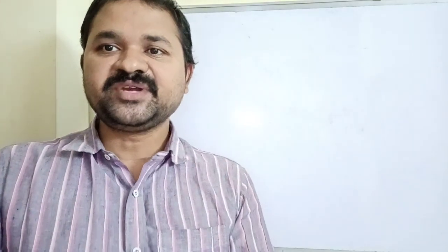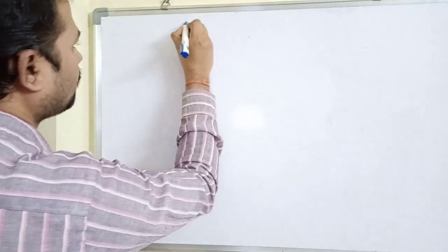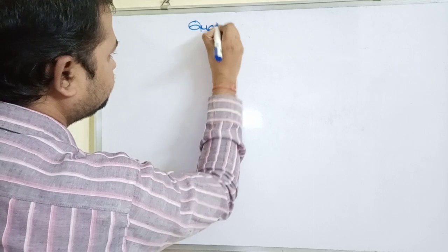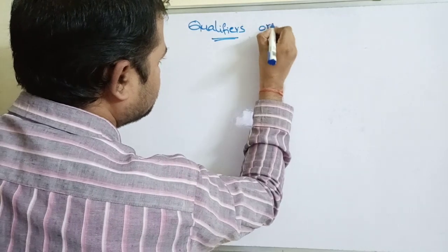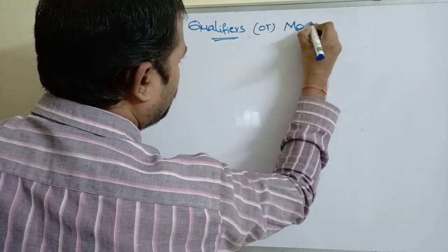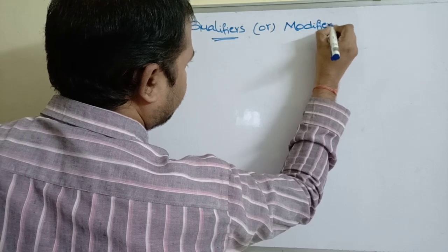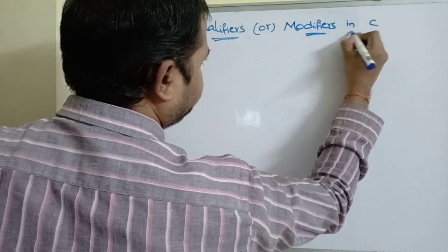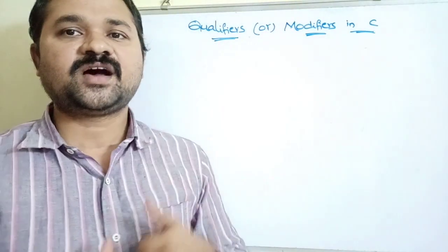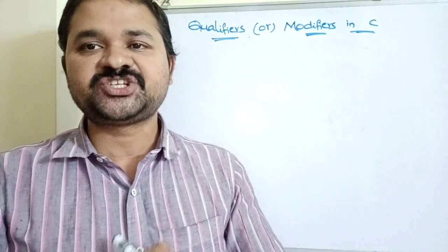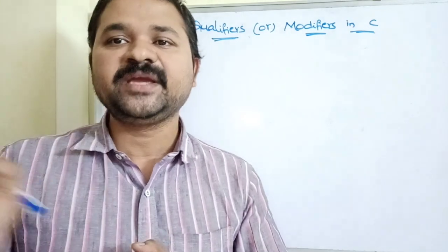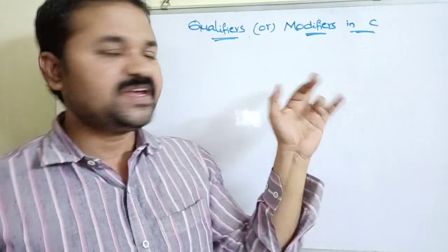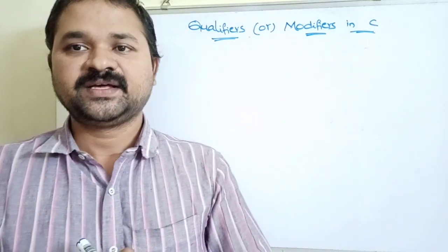In this class we are going to discuss qualifiers in C language. Qualifiers can also be called as modifiers. Qualifiers are mainly useful in order to change the meaning of basic data types. If you want to change the meaning of basic data types then we use either qualifiers or modifiers in C language.